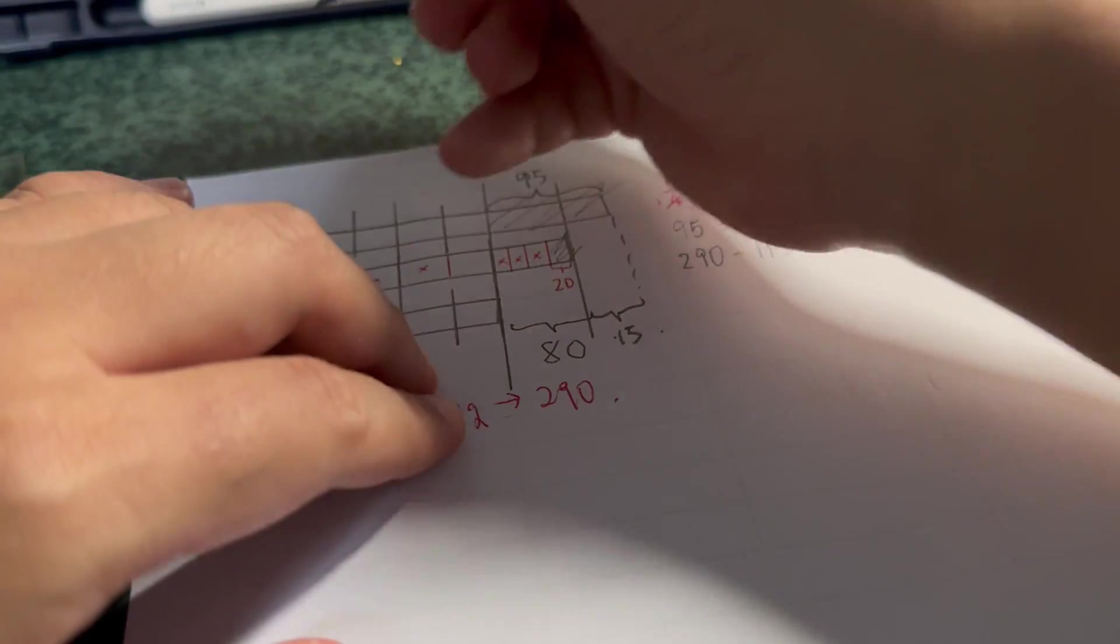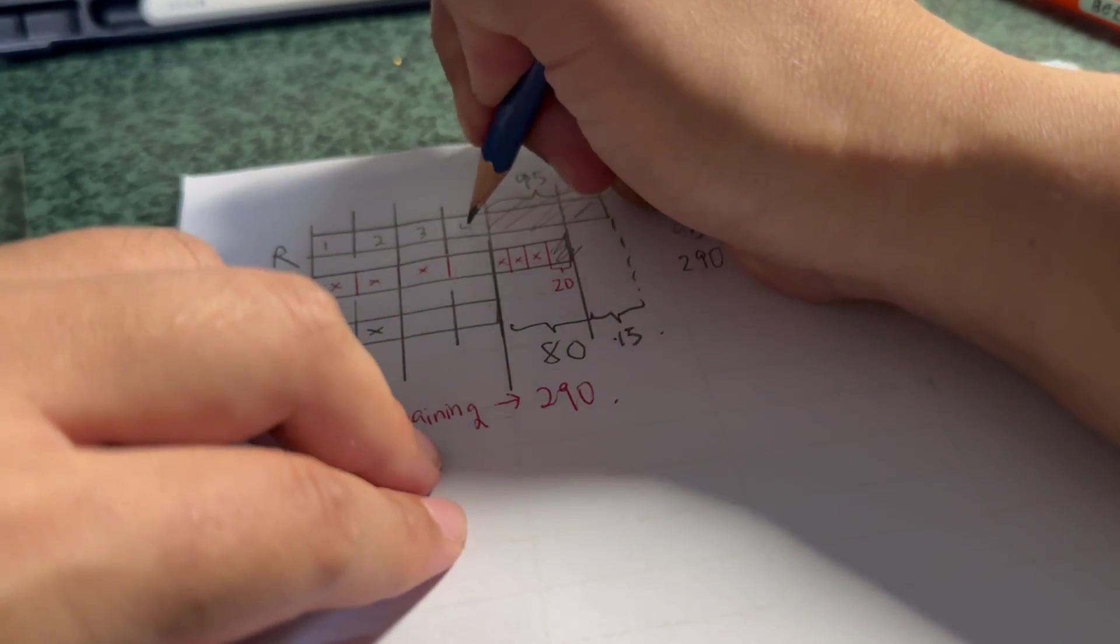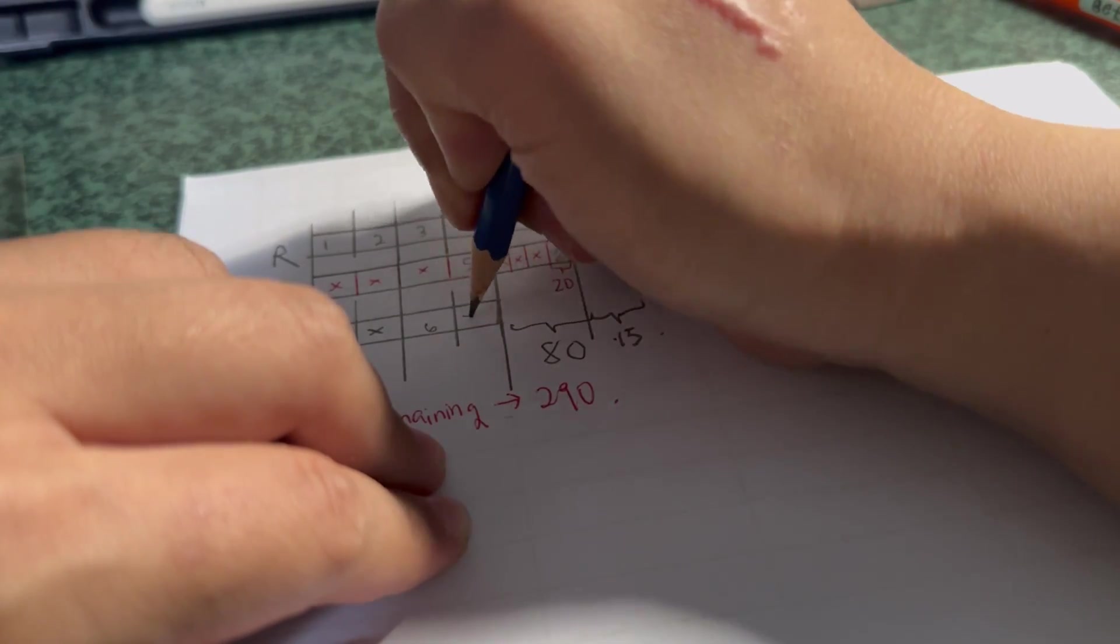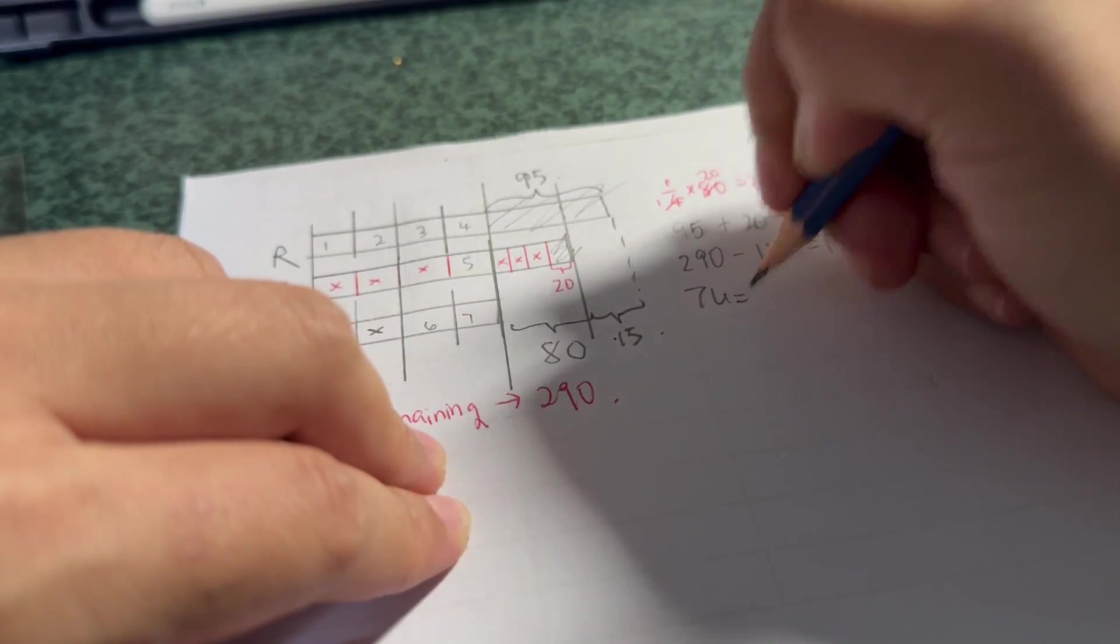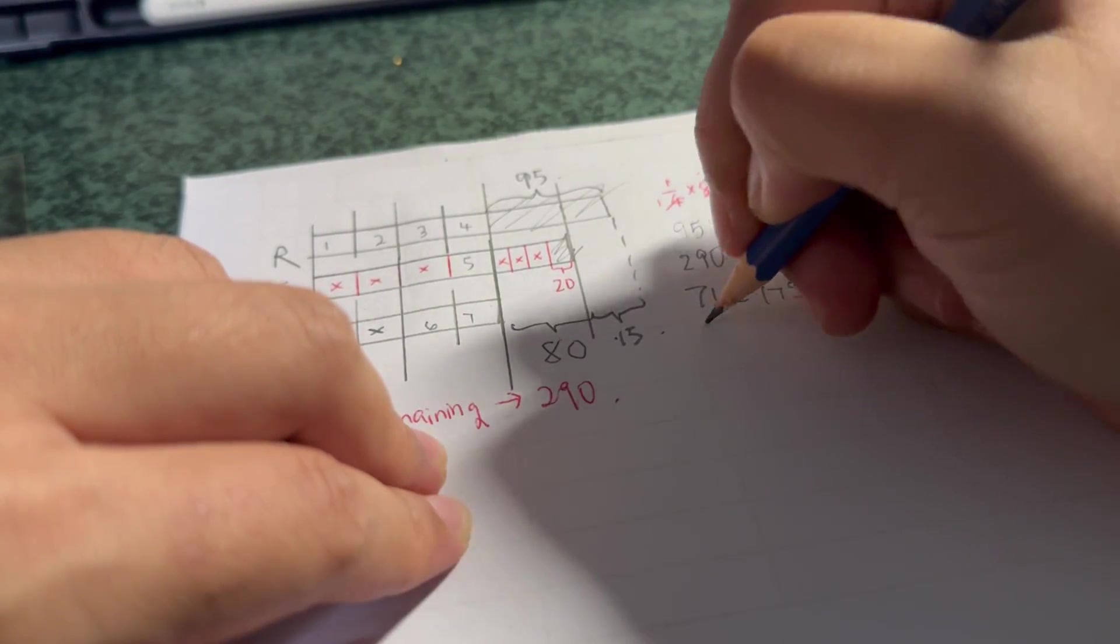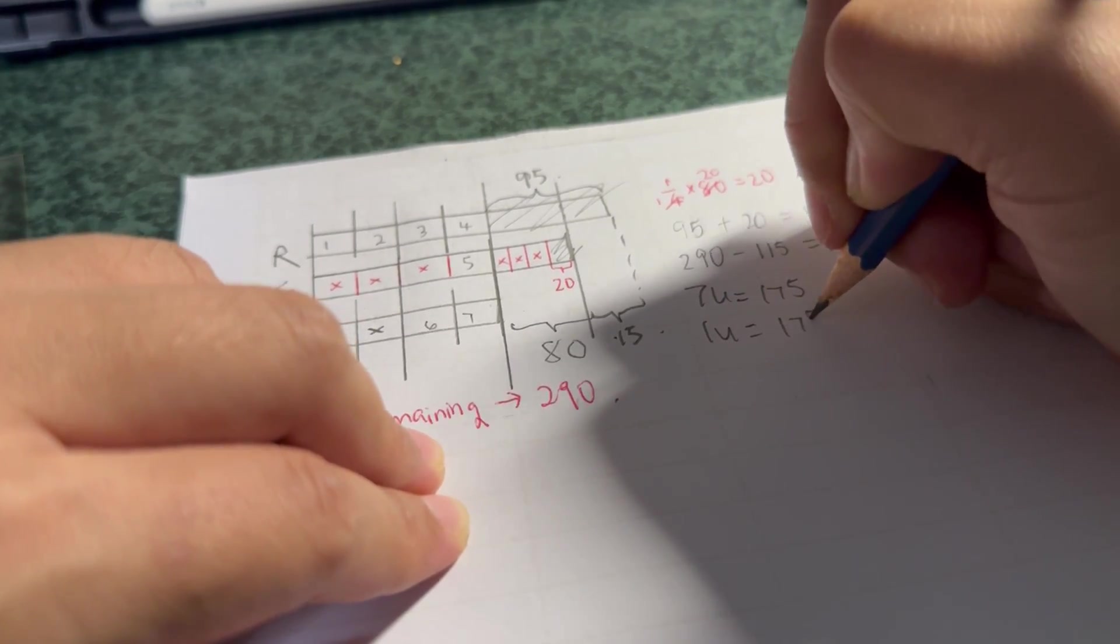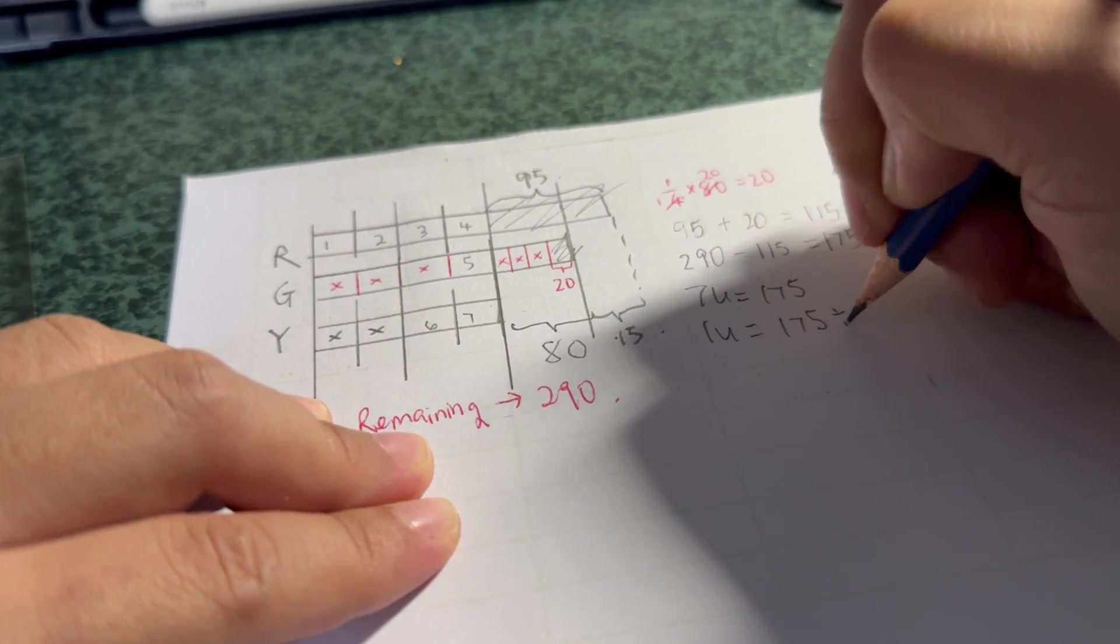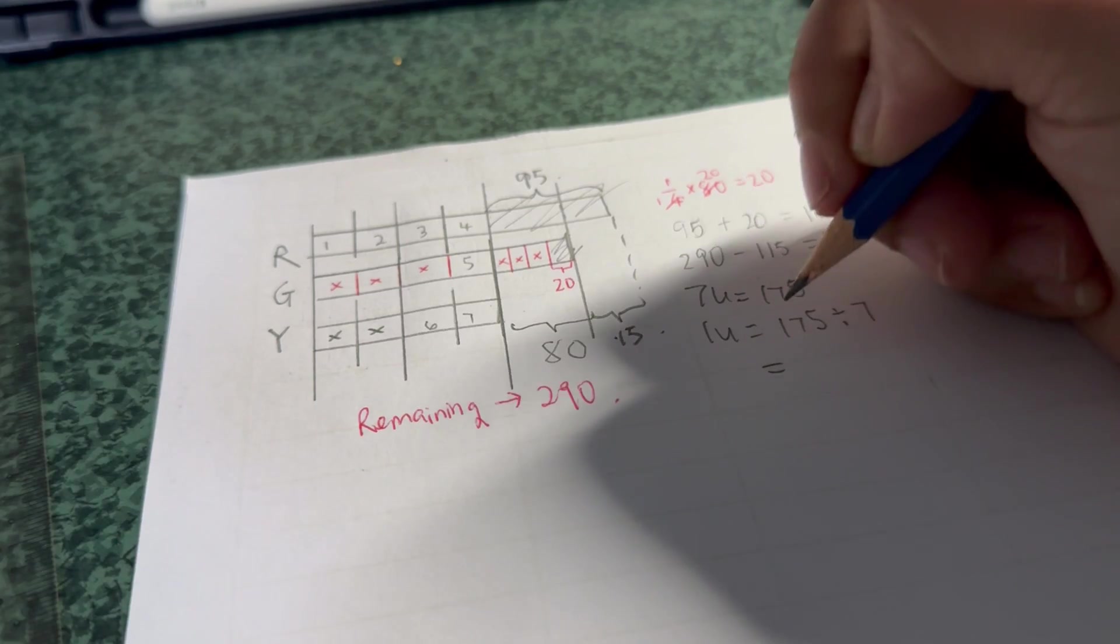So let's count how many units: one, two, three, four, five, six, seven. Seven U is equals to 175. One U will be 175 divided by 7, which is equals to 25.